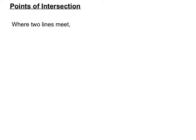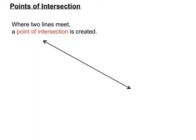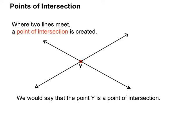Points of intersection. Where two lines meet, there's a point of intersection created. We use the word intersection to indicate where two roads meet, so if they're straight line roads, that's the same idea. So two lines meet there at the red point, and we could label that point Y and say that point Y is a point of intersection of those two lines.